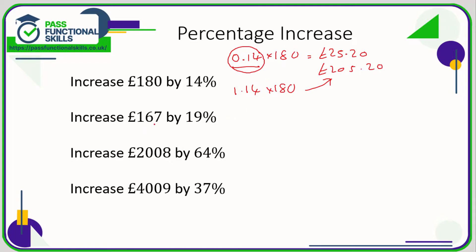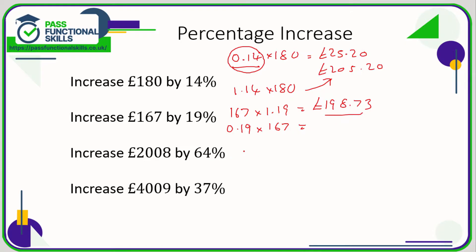So if I'm increasing 167 pounds by 19%, the quick way is to multiply 167 by 1.19, which takes me directly to 198 pounds 73. Alternatively, work out 19% of 167 and then add it on to 167 — you'll still get 198.73.